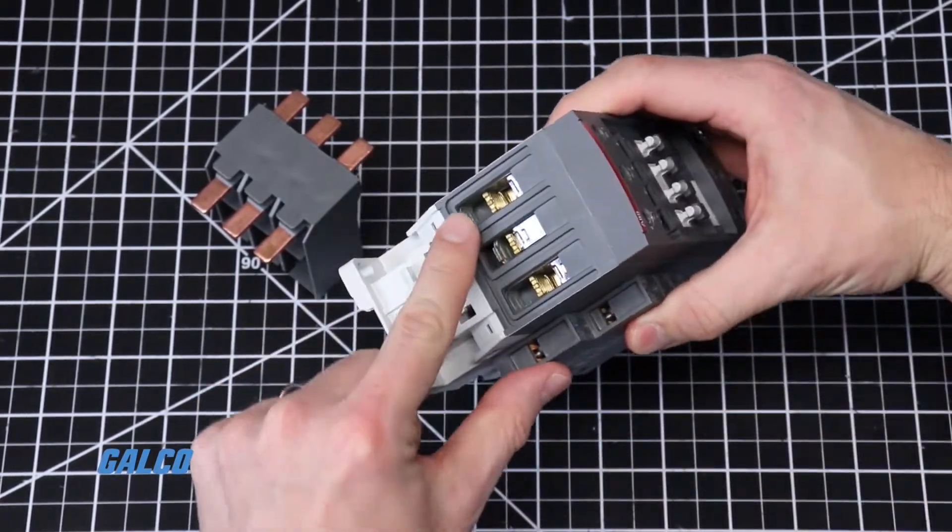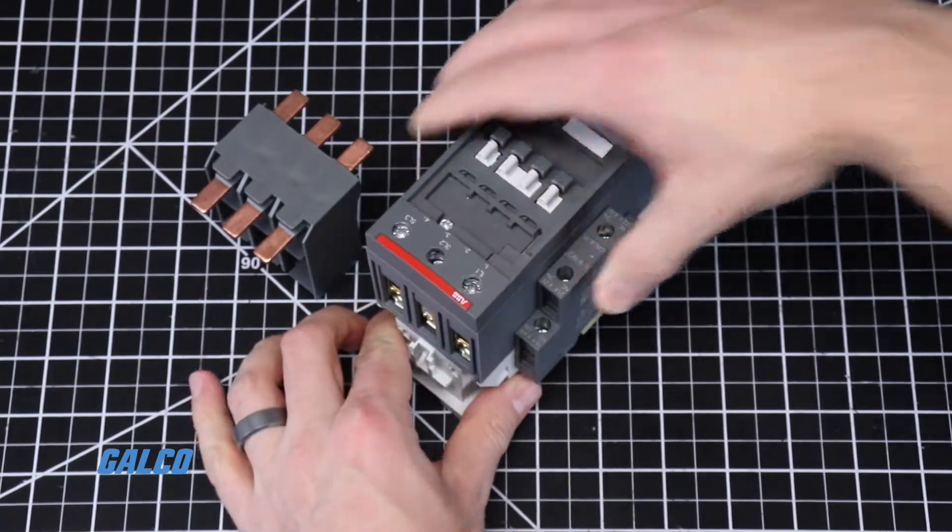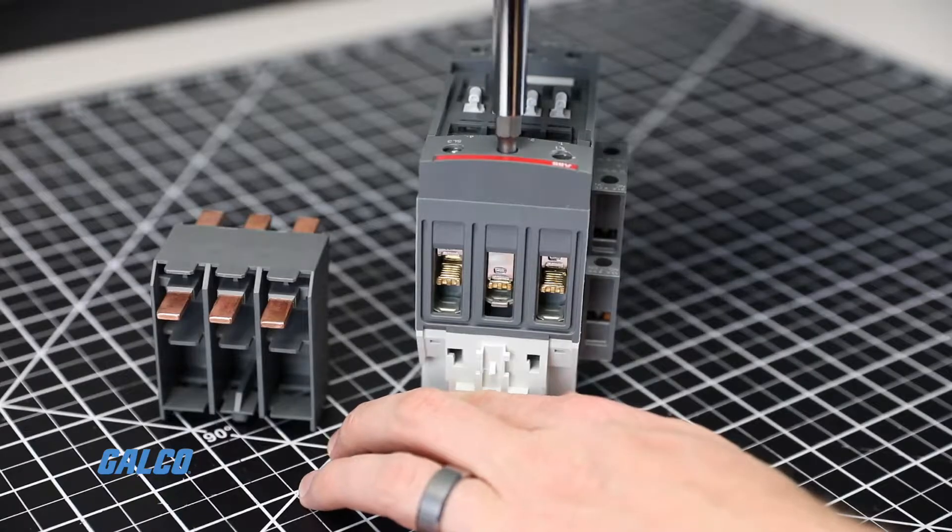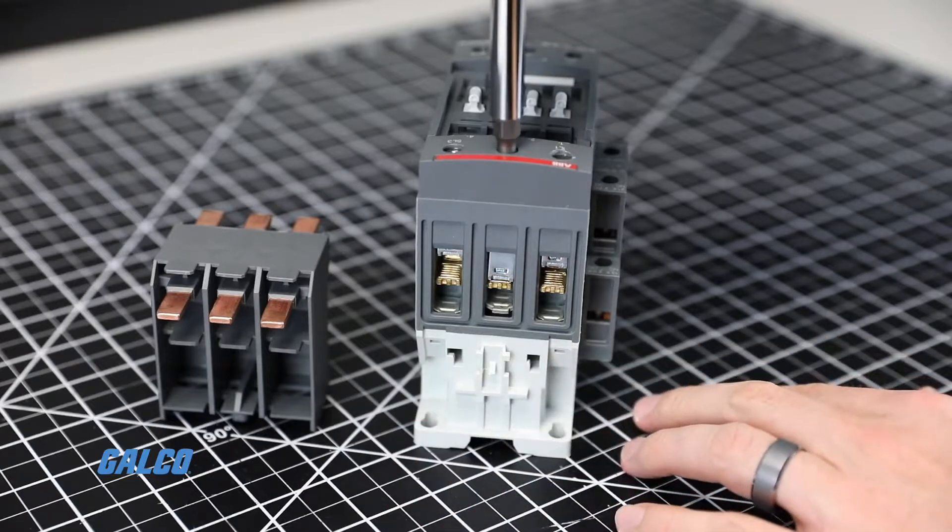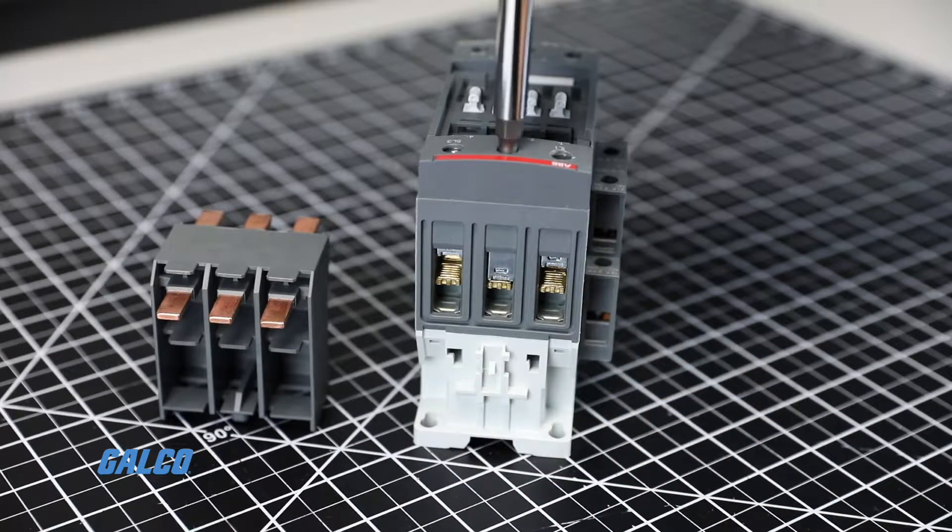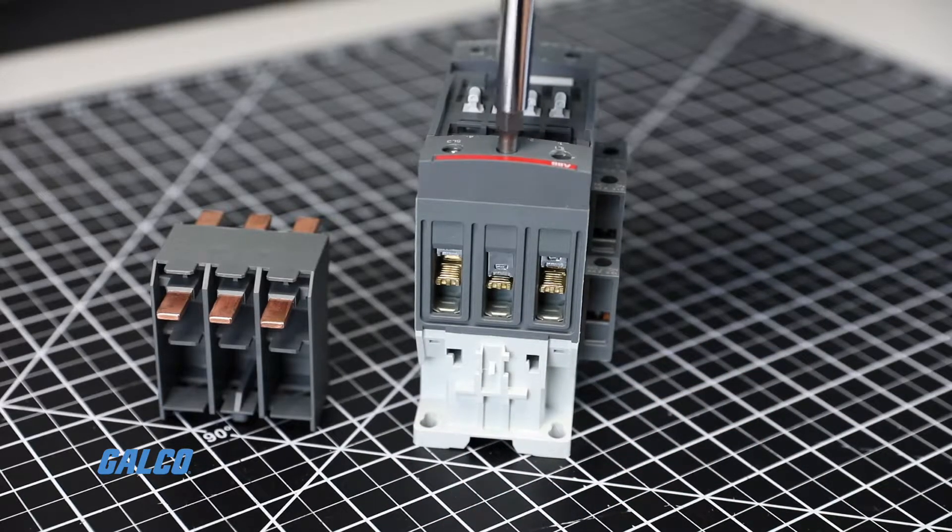To begin, first locate the bus bar terminals on the contactor. Using a screwdriver, loosen the terminal screws and ensure both sides of the bus bar terminal are in the open position.